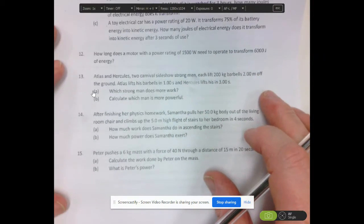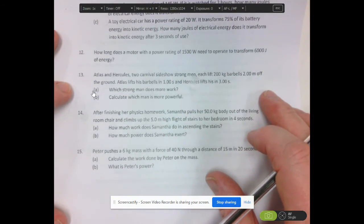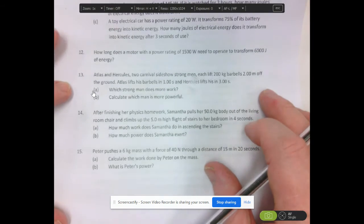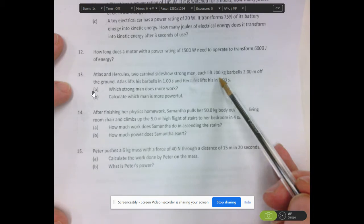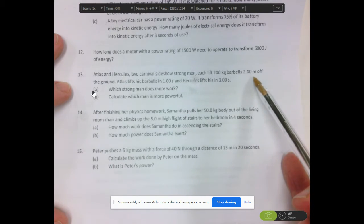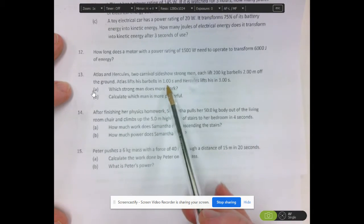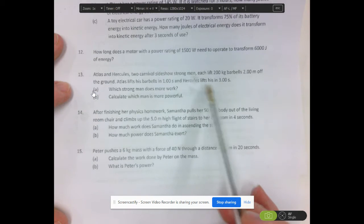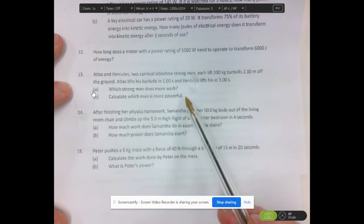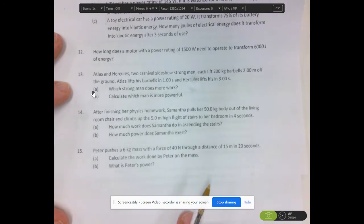Okay, Atlas and Hercules. So let's hear out. Atlas and Hercules are two carnival sideshow strongmen. Each is lifting 200 kilogram barbells two metres off the ground. Atlas does it in one second and Hercules does it in three seconds, which does more work and which is more powerful. So here we're just talking about work and power and what's the difference between them.